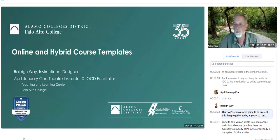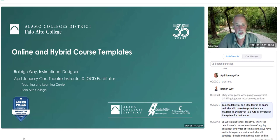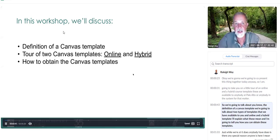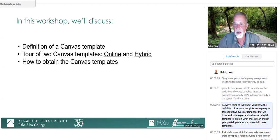We're going to co-present this together today. We're going to take you on a little tour of an online and a hybrid course template. These are available to anybody at Palo Alto, or anybody in the system. We're going to talk about the definition of a Canvas template, two types of templates — an online and a hybrid template — and how you can obtain these templates.